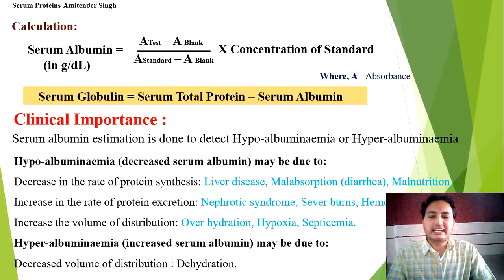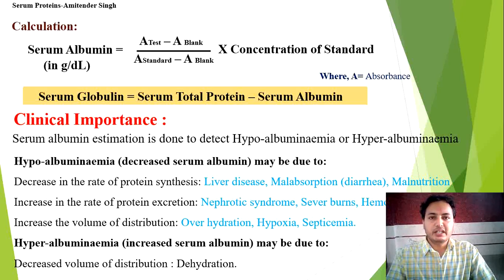If we need to segregate the protein fractions individually, we use electrophoresis — a technique by which we apply an electric field and pass the sample through electrolytes to separate it, obtaining distinct fractions of all proteins. This will be covered in depth in next lectures as it is part of higher semesters. This was a brief description and introduction to serum proteins. Please share, comment, and like. Thank you very much.